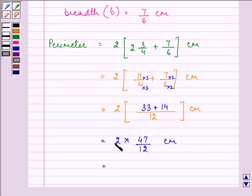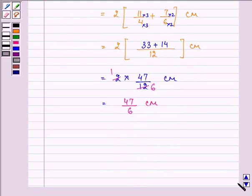So we have 2 into 33 plus 14 gives us 47 upon 12. Now I am simplifying. We have 47 by 6 centimeter as our perimeter for the rectangle, which can also be written as 7 and 5 by 6 centimeter.